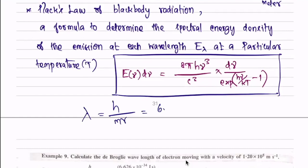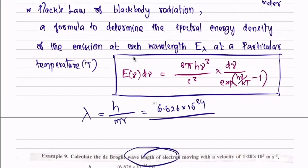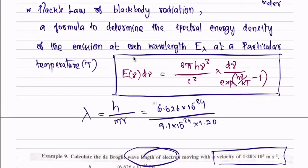Here is the De Broglie wavelength constant. The velocity is 1.20 × 10⁵ meters per second. We consider the De Broglie wavelength of the electron moving at that velocity. We calculate using the formula and get the De Broglie wavelength. The final answer is 6.068 × 10⁻⁹ meters.